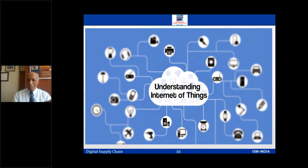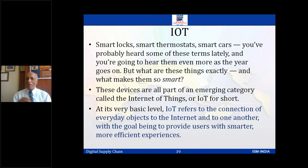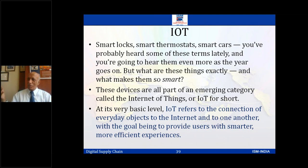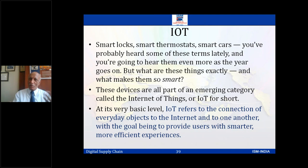When we use the word 'smart' — smart locks, smart thermostats, smart cars — it means they take action themselves. For example, a smart thermostat: I'm sending food items or medical bulk drugs that are very sensitive to temperature. If the temperature should be only 10 to 12 degrees and it becomes 15, it automatically gets the signal and starts cooling more. The smart thermostat takes care of reacting and acting. These devices are becoming part of the emerging category called Internet of Things.